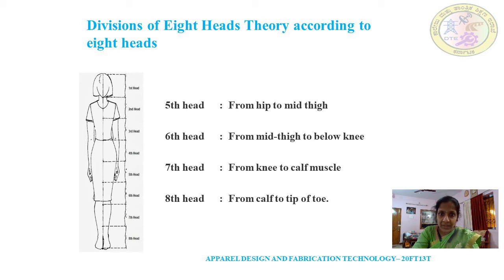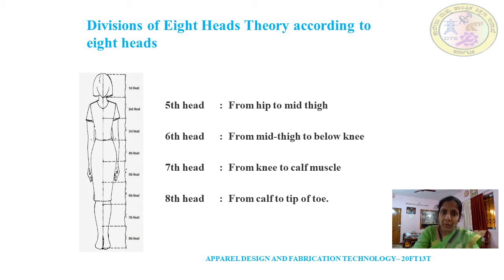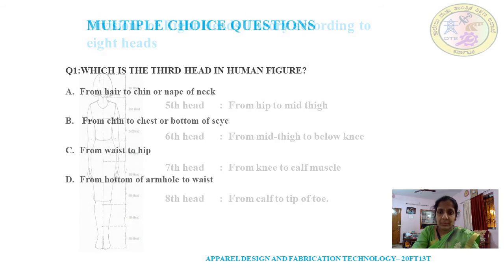The seventh head is from below knee to calf muscle. And the eighth head is from calf to tip of toe — the tip of toe where the human figure stands. That area is called the tip of toe.